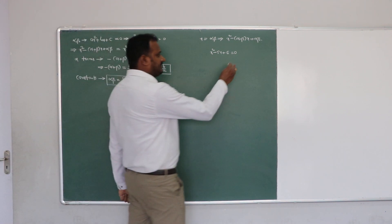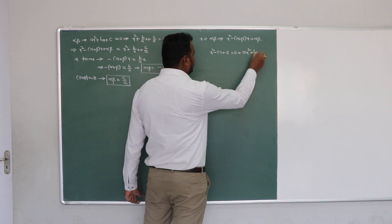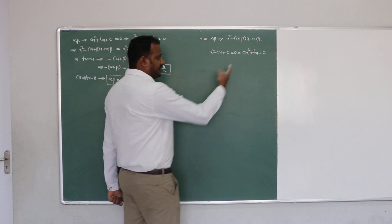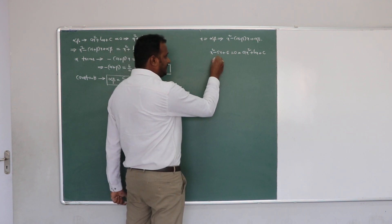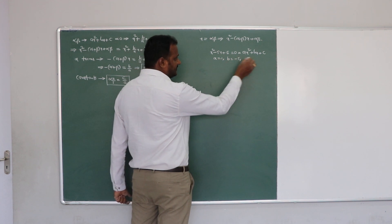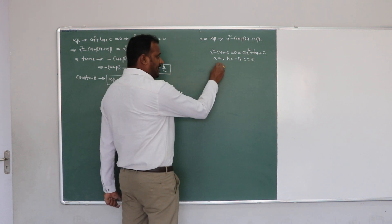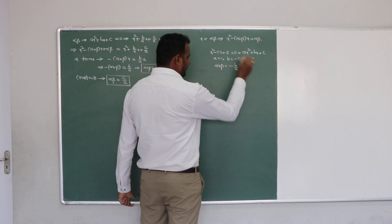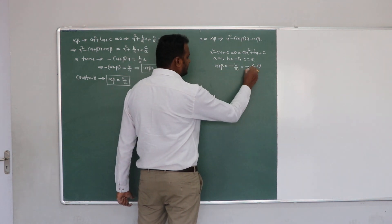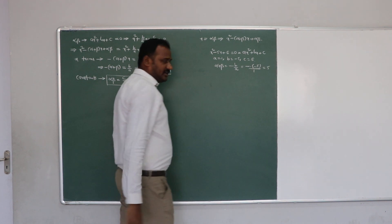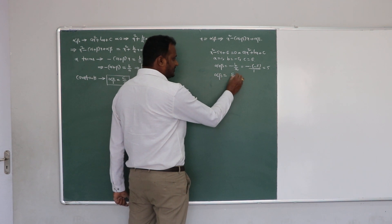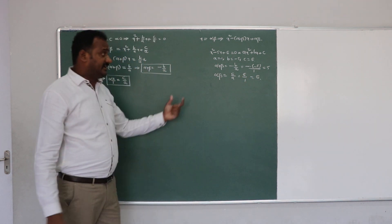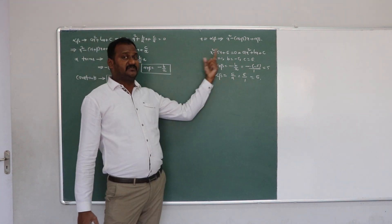Before that, compare this polynomial to the standard form ax squared plus bx plus c, and identify the coefficients. The coefficient of x squared is 1, so a equals 1. The coefficient of x is minus 5, so b equals minus 5. The constant is 6, so c equals 6. Then alpha plus beta equals minus b/a equals minus(minus 5) divided by 1, which equals 5. And alpha times beta equals c/a equals 6 divided by 1, which equals 6.